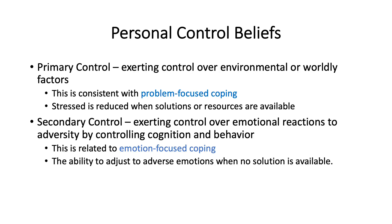Personal control beliefs come in two types. Primary control is when a person is exerting control over environmental factors — this is problem-focused coping, trying to get past stressors to maintain adequate functioning. Secondary control is what happens when you can't exert primary control — this is emotion-focused coping, the ability to adjust to adverse emotions when no solution is available. Getting through a divorce, losing a job, having financial problems, or getting diagnosed with a serious condition like type 2 diabetes or heart disease — there's no way to change the past, so now what are you going to do about it? That's emotion-focused coping.